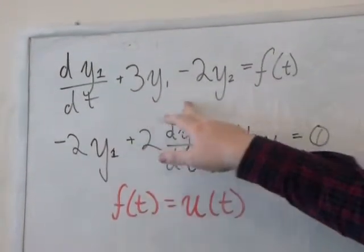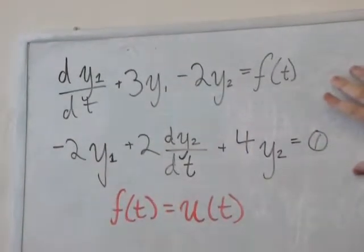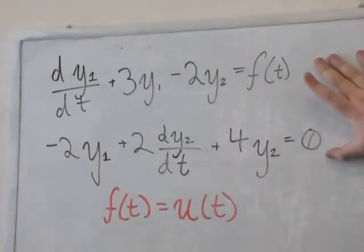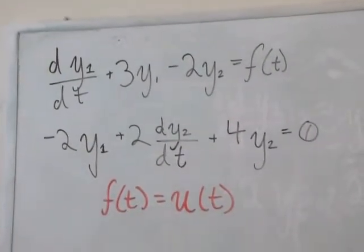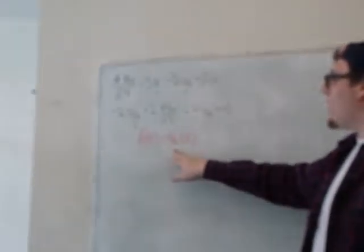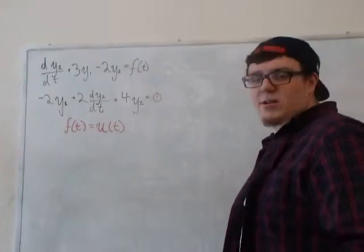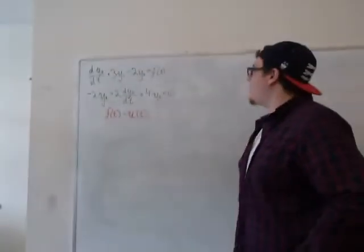The outputs are y1 and y2 and the input is f(t), and the two outputs are given by this system. And what we want to do is solve this differential equation using Laplace transforms for when your input is a unit step function, and we also want to find the transfer functions from input to output of each of the outputs.